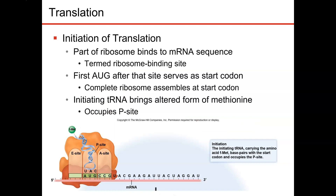There are three steps to translation: initiation, elongation, and termination. Initiation occurs when the ribosome comes together on the messenger RNA. You have that small subunit and that large subunit. There are three different sites: an E-site, a P-site, and an A-site. The P-site is the very first site where transfer RNA comes in, carrying with it the first amino acid coded for in the protein.